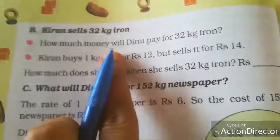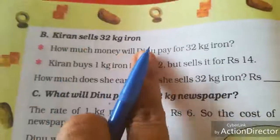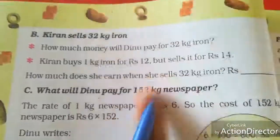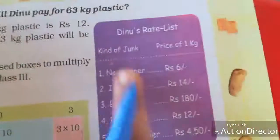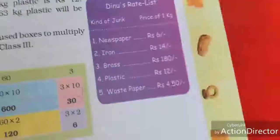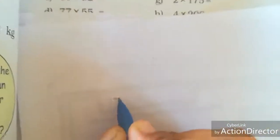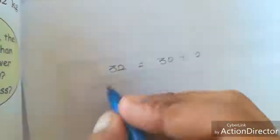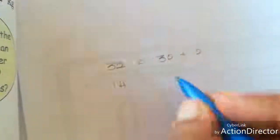Big question: Kiran sells 32 kg of iron. How much money will Dinu pay for 32 kg of iron? Now look at the tabular column — this is Dinu's rate list. Iron: 1 kg is Rs. 14. Now we want to find it for 32 kg. I am going to use the Watts method. First we want to split 32 into tens and ones: 30 plus 2. And then 14 also we want to split into tens and ones: 10 plus 4.